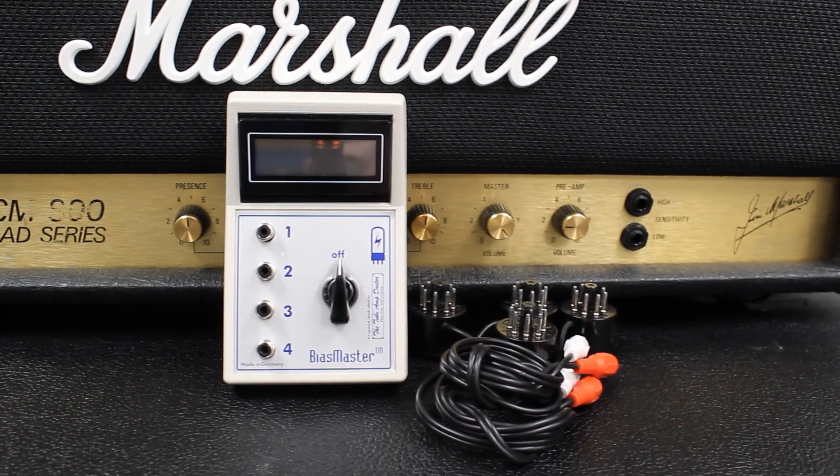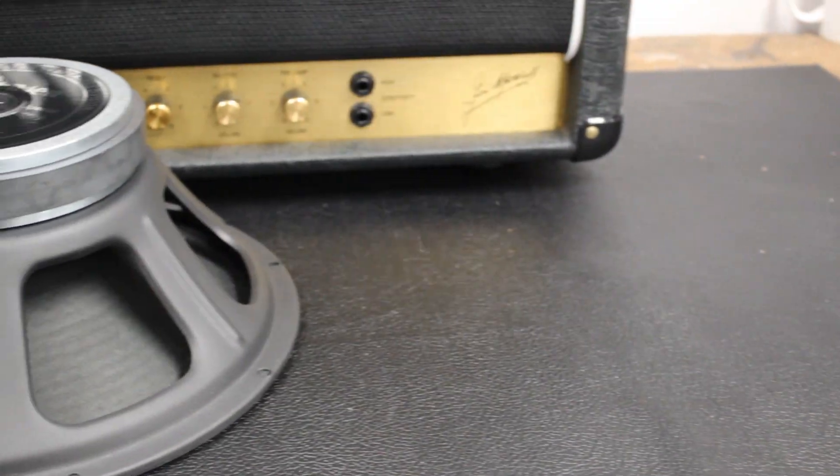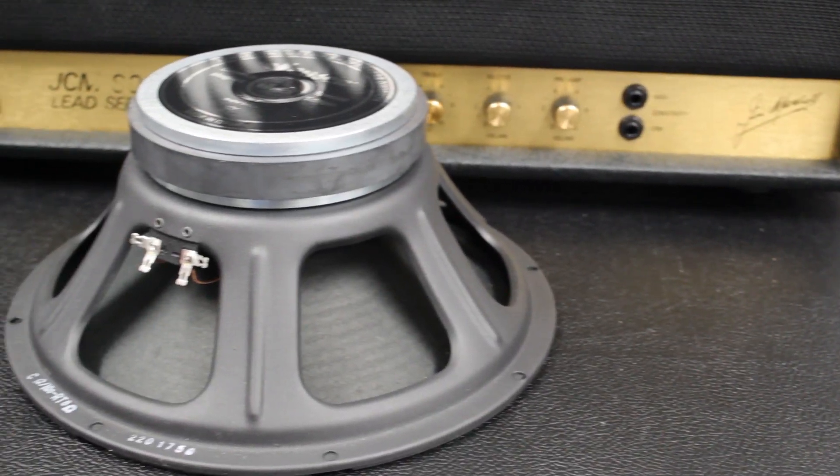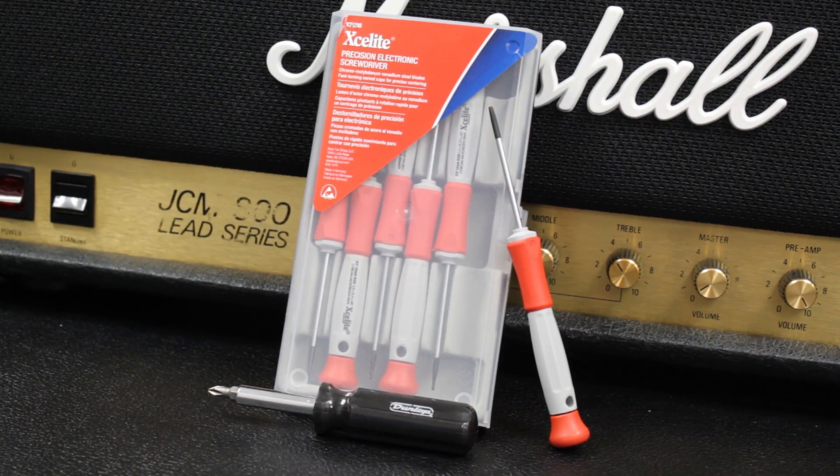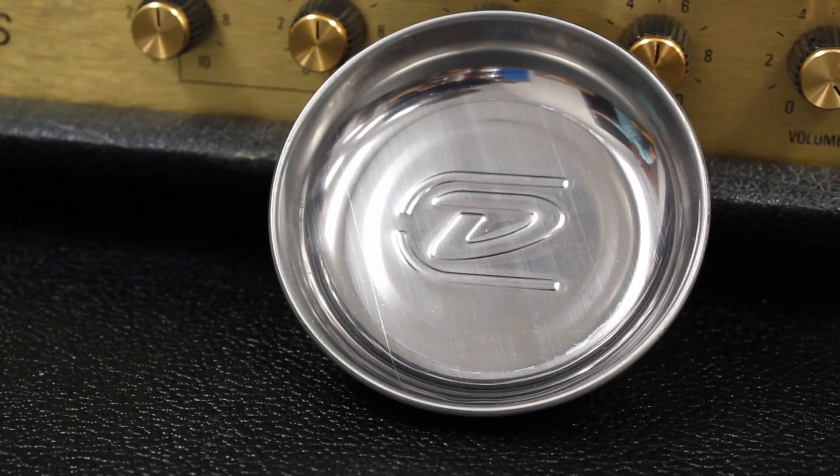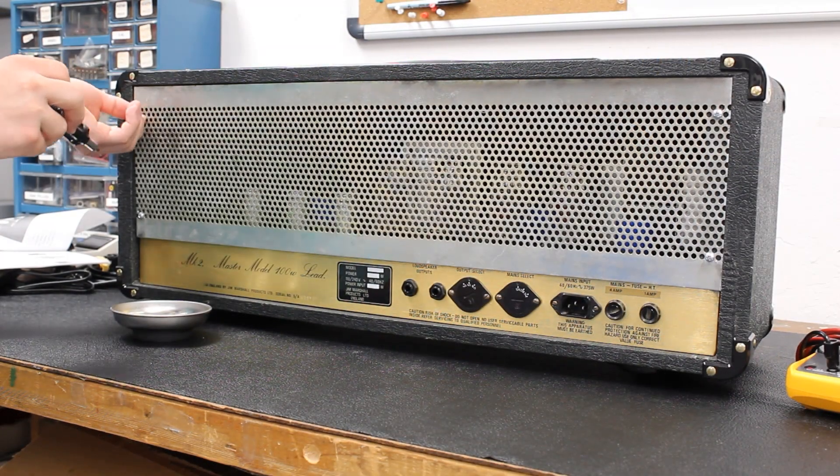You will need a bias meter and probes along with a multimeter, a speaker cable, a dummy load—in our case we are using a normal speaker—and some basic screwdrivers. We are also using this parts tray from Dunlop. This has a magnet at the bottom and it makes keeping track of your hardware a breeze.